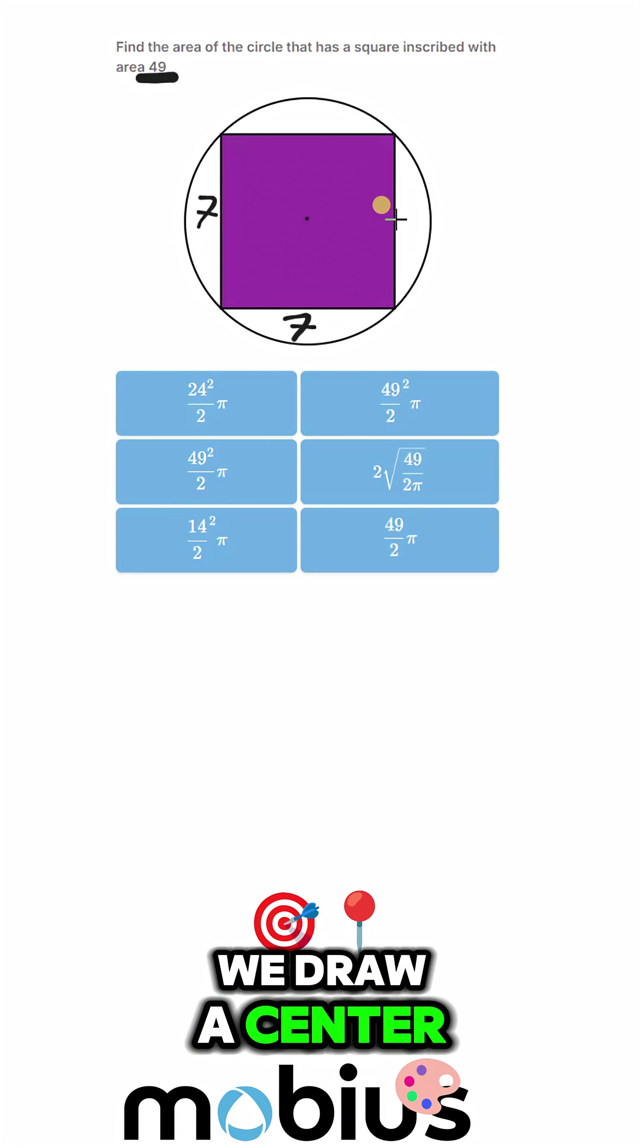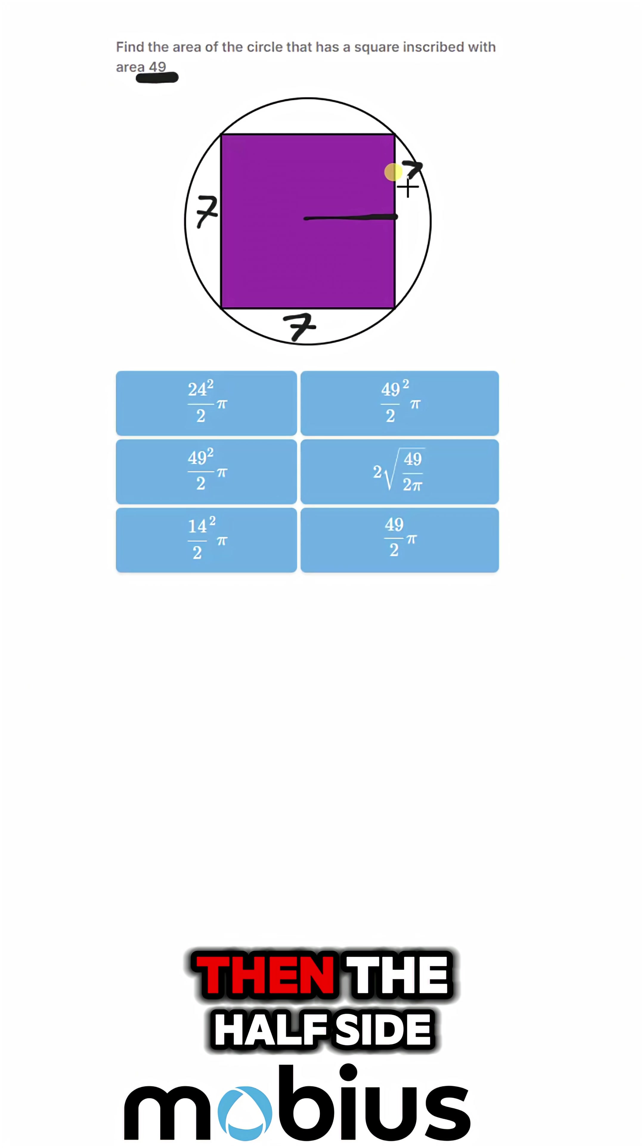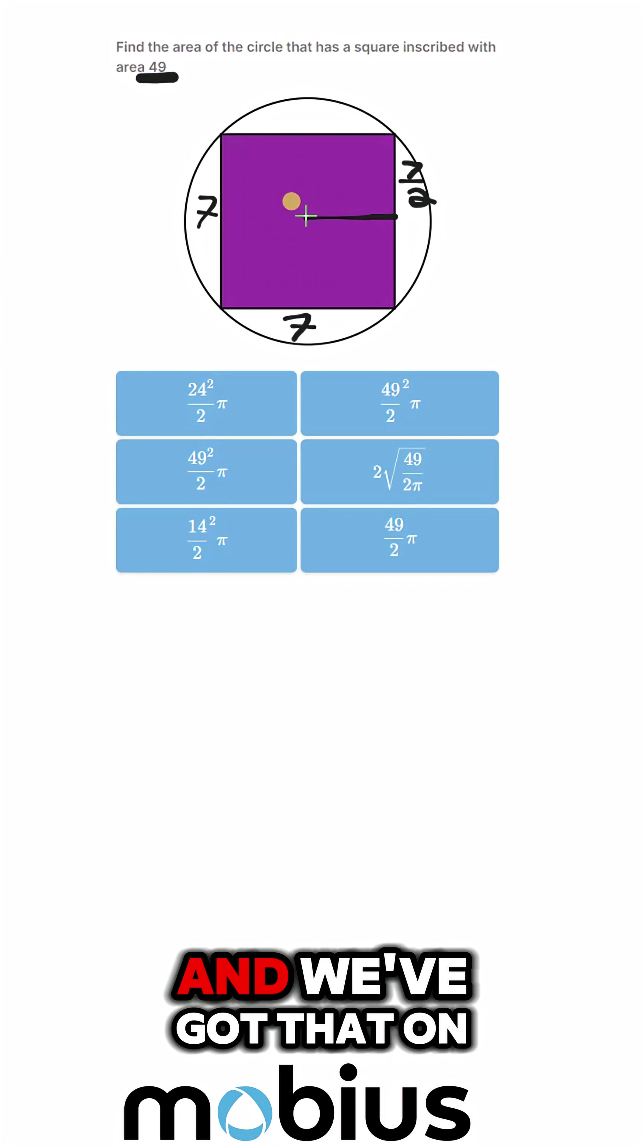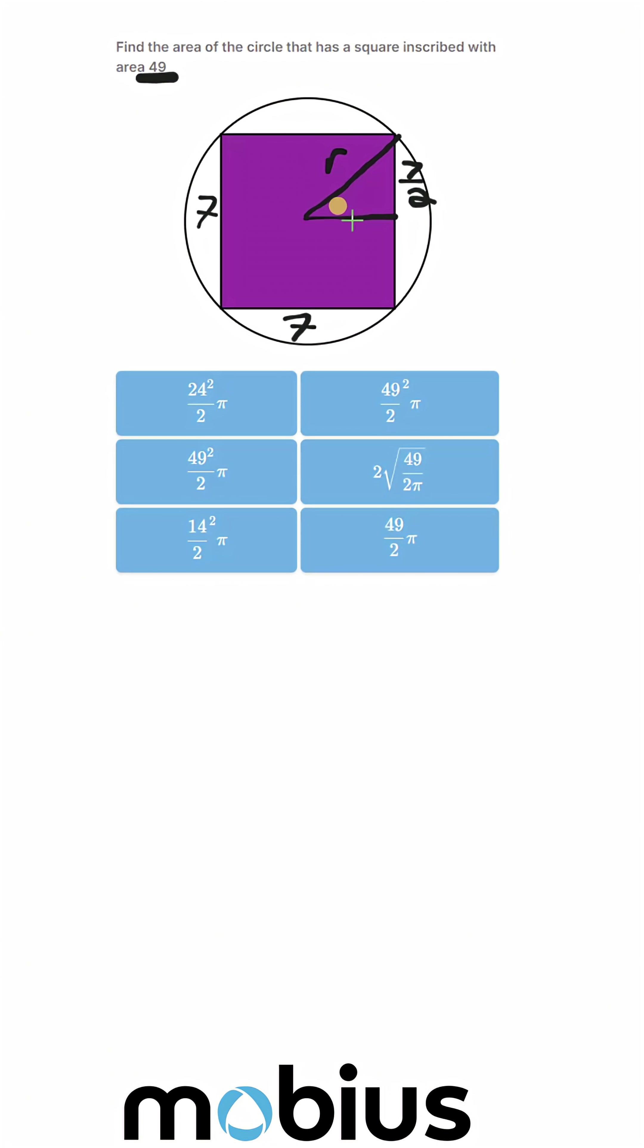That's the case. Draw a center there, then let's draw a line here. The half side is 7 over 2, and we've got that on both sides. And we draw the hypotenuse here, which is also going to be the radius.